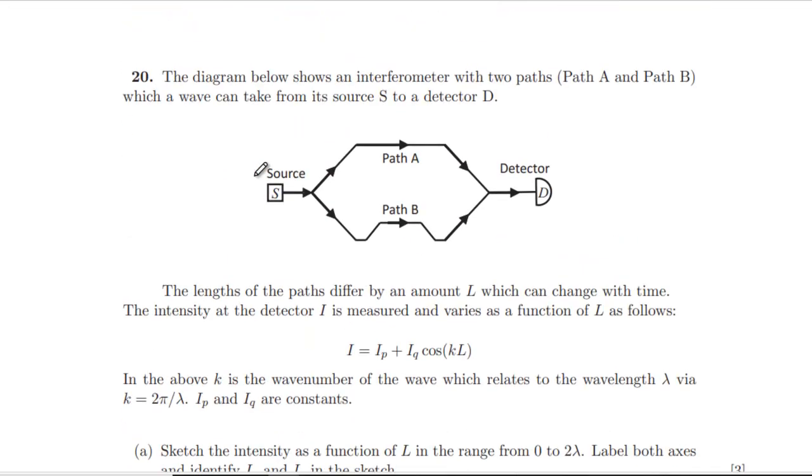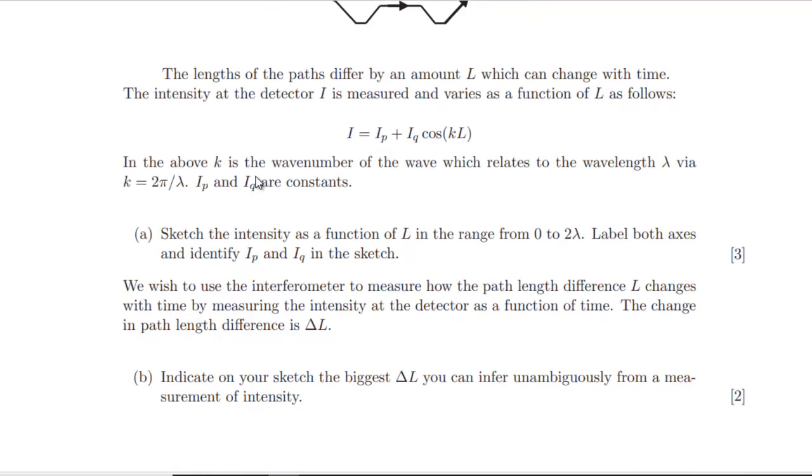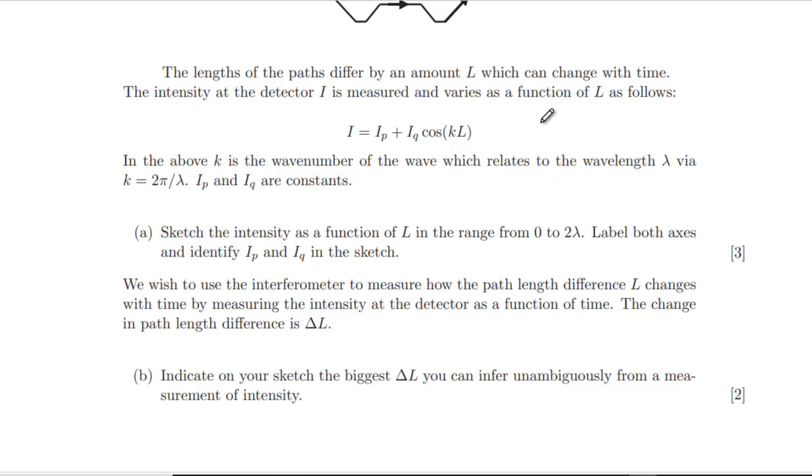Something new. This is definitely the thing they do in these more recent papers. Something that immediately looks scary. Interferometers we're talking about here. So we've got two paths, path A, path B, top or bottom, a wave can take from the source to the detector. And we've got a difference in path length that varies by some cos function here.